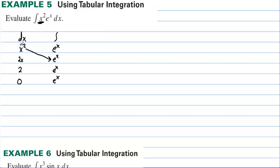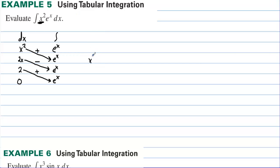We assign alternating signs starting with plus: plus, minus, plus. The answer is x²eˣ minus 2x·eˣ plus 2eˣ plus C.